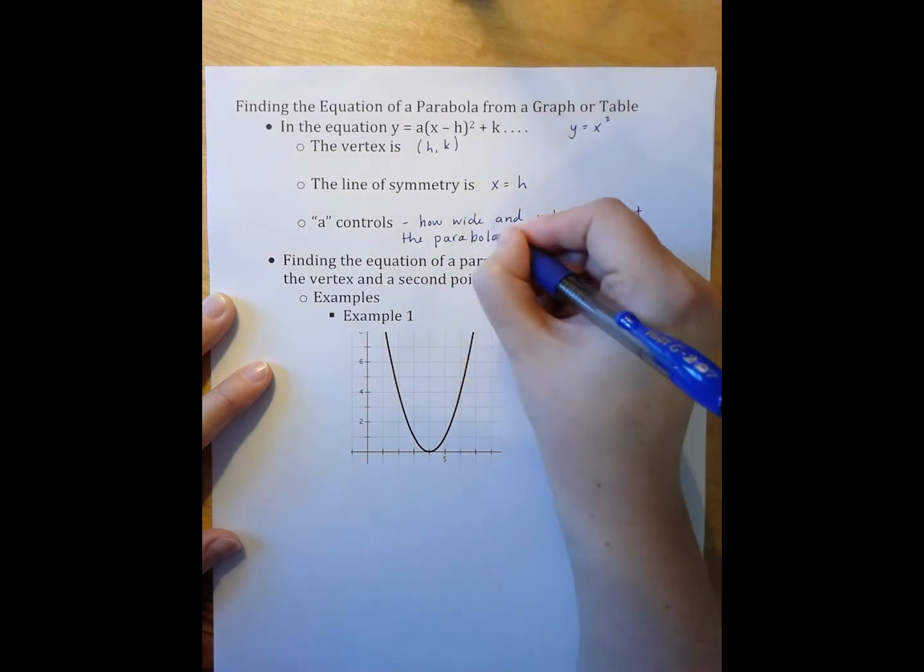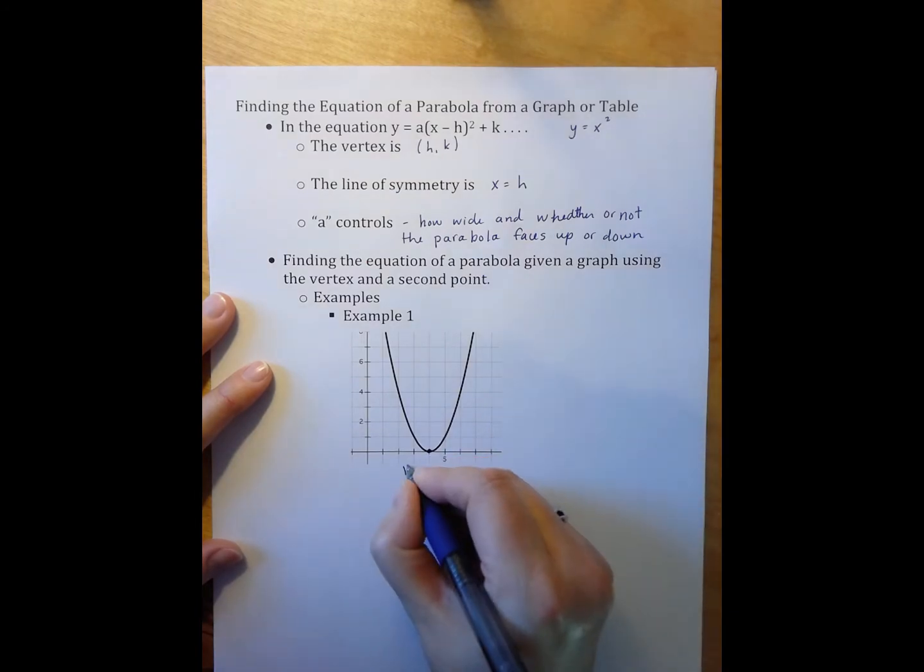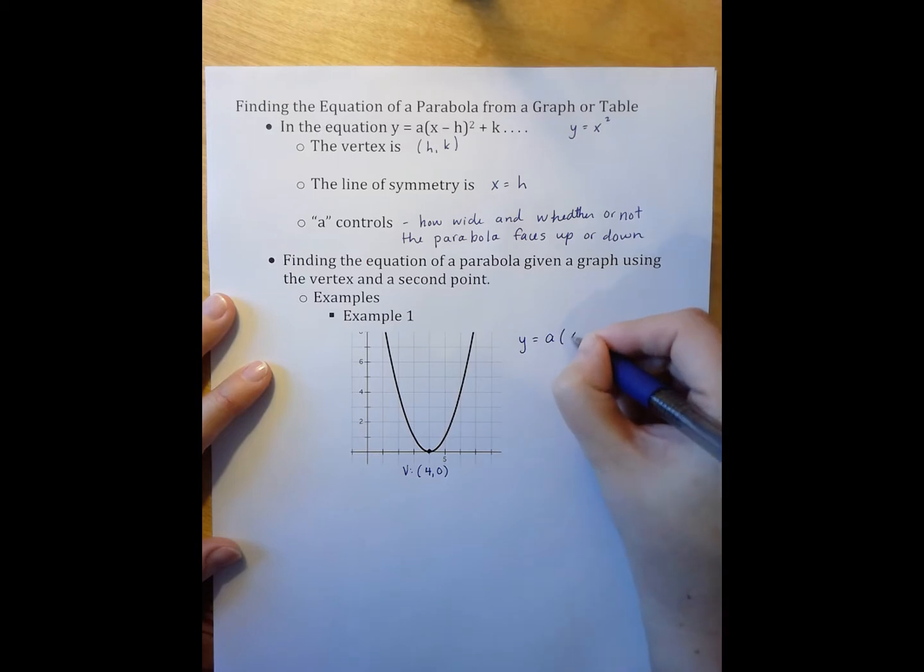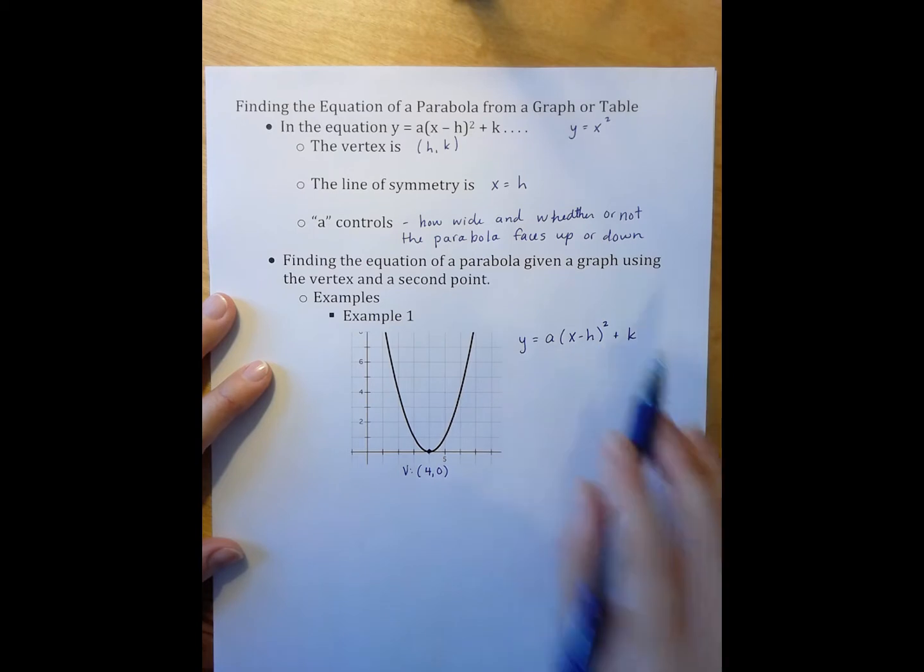In these notes, we're going to talk about two different methods. The first involves finding the vertex and using a second point. So in this case, our vertex is right here at 4, 0. So I always start with my vertex form generic equation, y equals a times the quantity x minus h squared plus k.